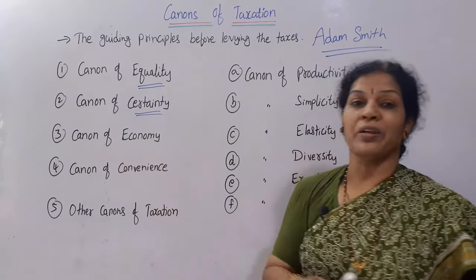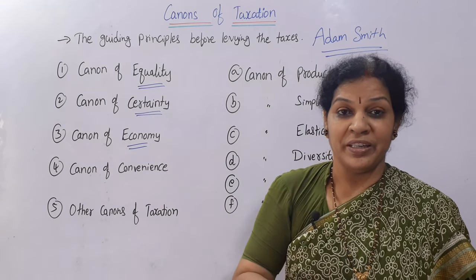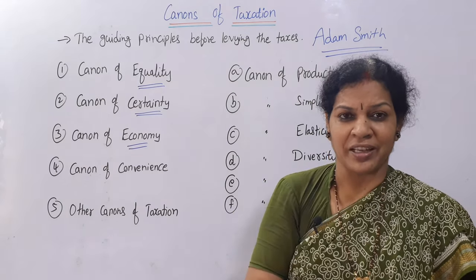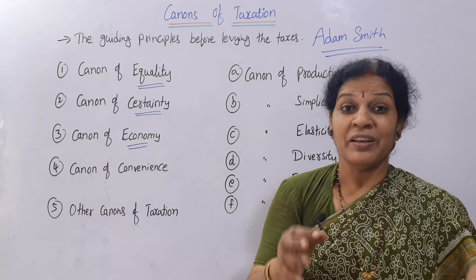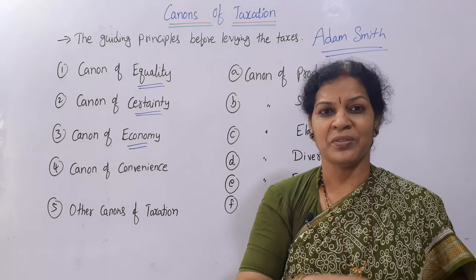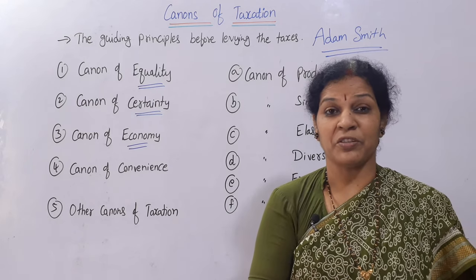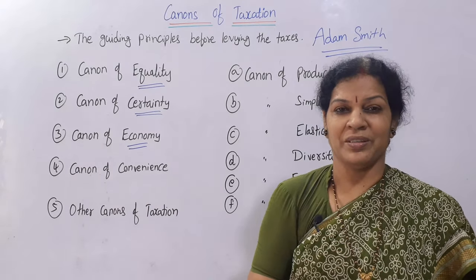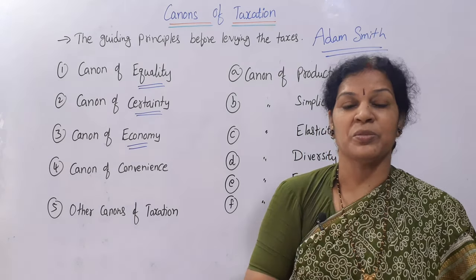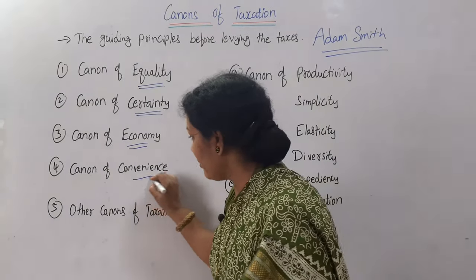The next canon is the canon of economy. When you are charging tax on people, whatever amount you spend for tax administration should be kept low. Don't spend too much when implementing the tax. For example, if we collect 100 crores of rupees as tax but spend 10 to 20 crores just on administration, that defeats the purpose. A minimum amount should be spent, not too much — that is the canon of economy.